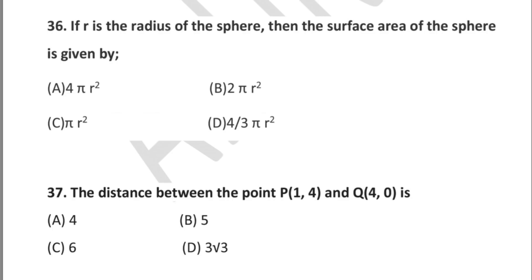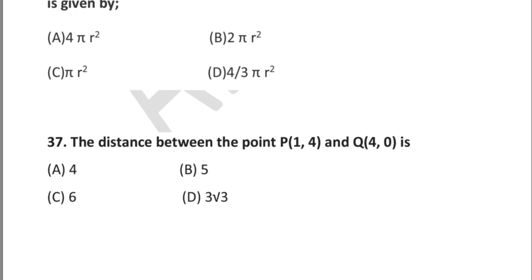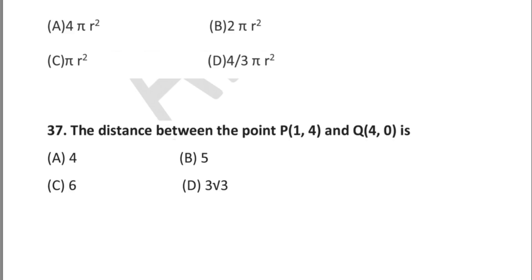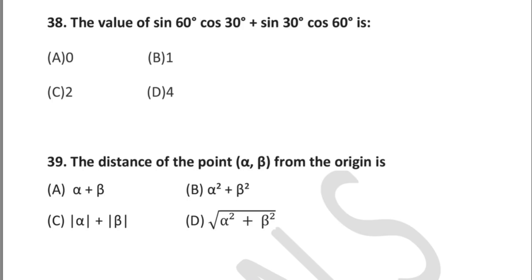Question 37: the distance between the points P(1, 4) and Q(4, 0) is — option A: 4, option B: 5, option C: 6, option D: 3√3. When attempting MCQs, try to solve with complete steps — don't skip any steps. A wrong step can cost you marks. By practicing more questions, it will be easier to attempt them in the exam.